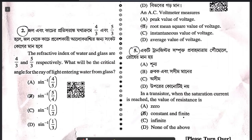Second question: the refractive index of water and glass are 4/3 and 5/3 respectively. What will be the critical angle for the ray of light entering water from the glass? It's a very simple question. The answer is B.